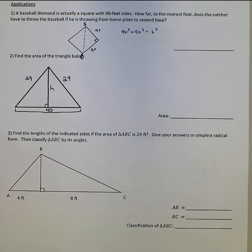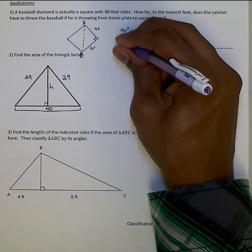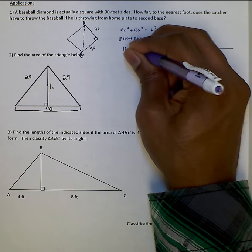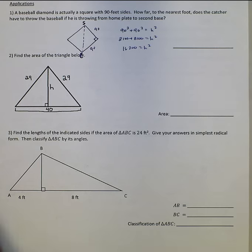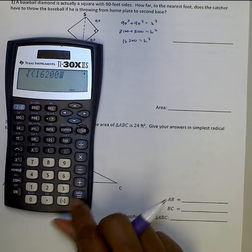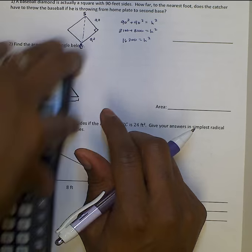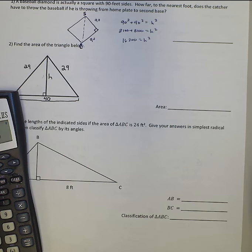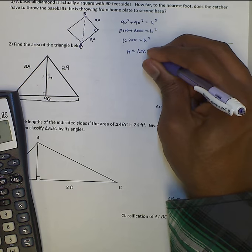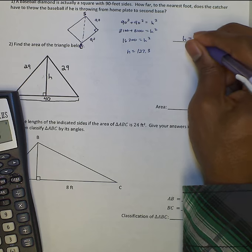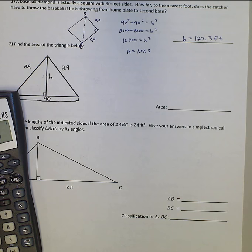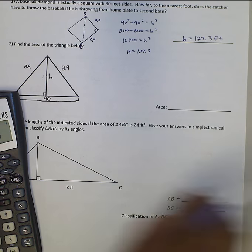We can find this distance of the hypotenuse by saying 90 squared plus 90 squared equals our hypotenuse squared. 90 squared is 8,100 plus 8,100 equals H squared, so 16,200 equals H squared. In order to find H, I'm going to take the square root of 16,200. H will be 127.3 feet. So from home plate to second base is 127.3 feet.